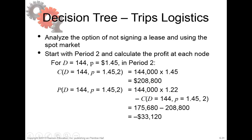Let's start in the second period. If the demand is 144,000 and the price on the spot market is 145, then the cost is 144 times 145 equals 208,800.